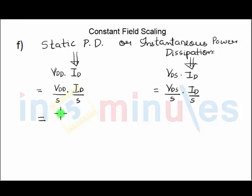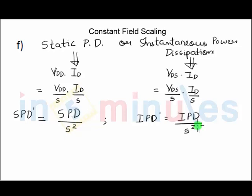This leads us to a very important derivation: the static power dissipation reduces by a factor of S square, or the instantaneous power dissipation also is reduced by a factor of S square. And this is something which will really help us because we know that in VLSI or in chip designing, power dissipation is one of the most important parameters. So this is a biggest advantage of constant field scaling.